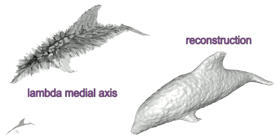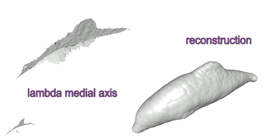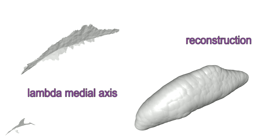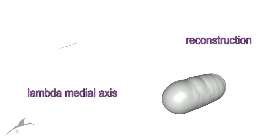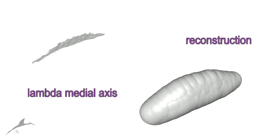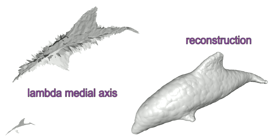Another method, the lambda medial axis, is able to preserve the original topology during the simplification. But this method assigns importance based on the absolute size of geometric features, therefore it cuts off significant parts of the fins and the tail before removing all the noise from the trunk.